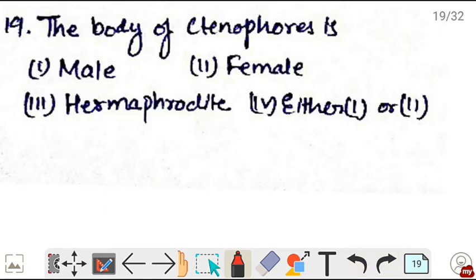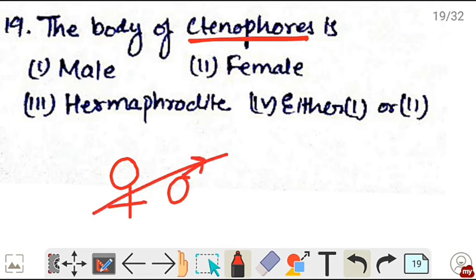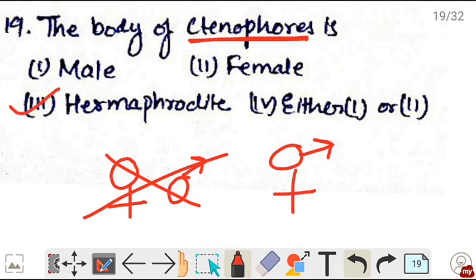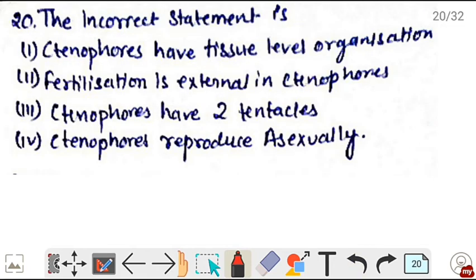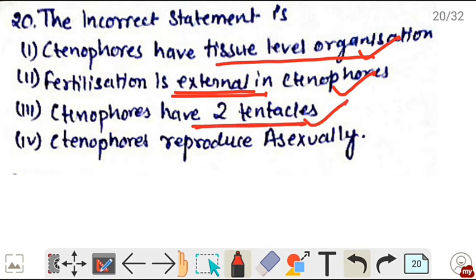The function of comb plates is locomotion. Next, the body of ctenophores - in ctenophores, sexes are not separate, that is female and male are not separate. They are hermaphrodites. Correct is option 3, hermaphrodites, meaning male and female organs are present in the same body. Next, the incorrect statement is - ctenophores have tissue level organization, true. Fertilization is external in ctenophores, true. Ctenophores have two tentacles, true. And ctenophores reproduce asexually, this is wrong. Ctenophores show only sexual reproduction. Incorrect statement is option 4.